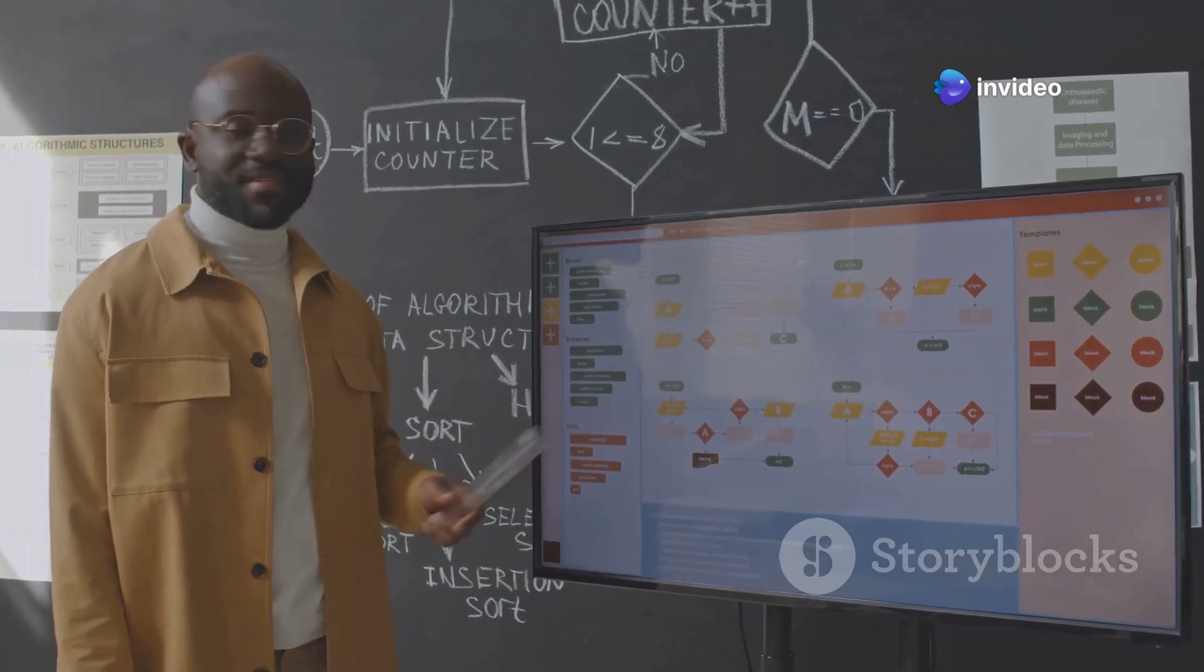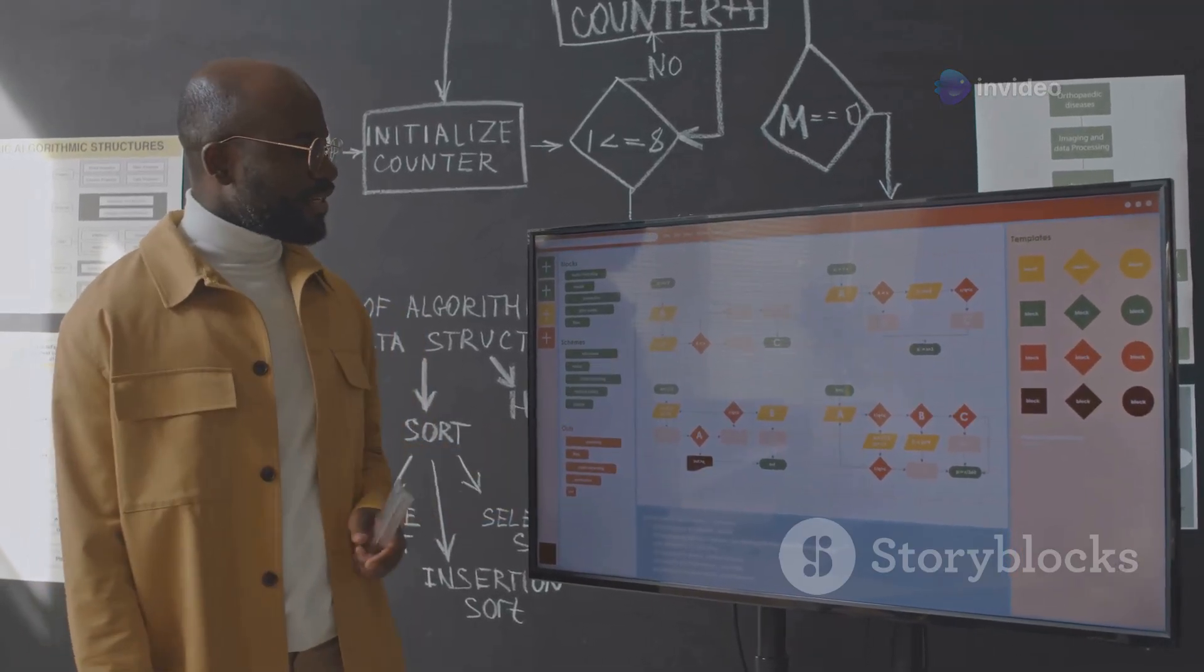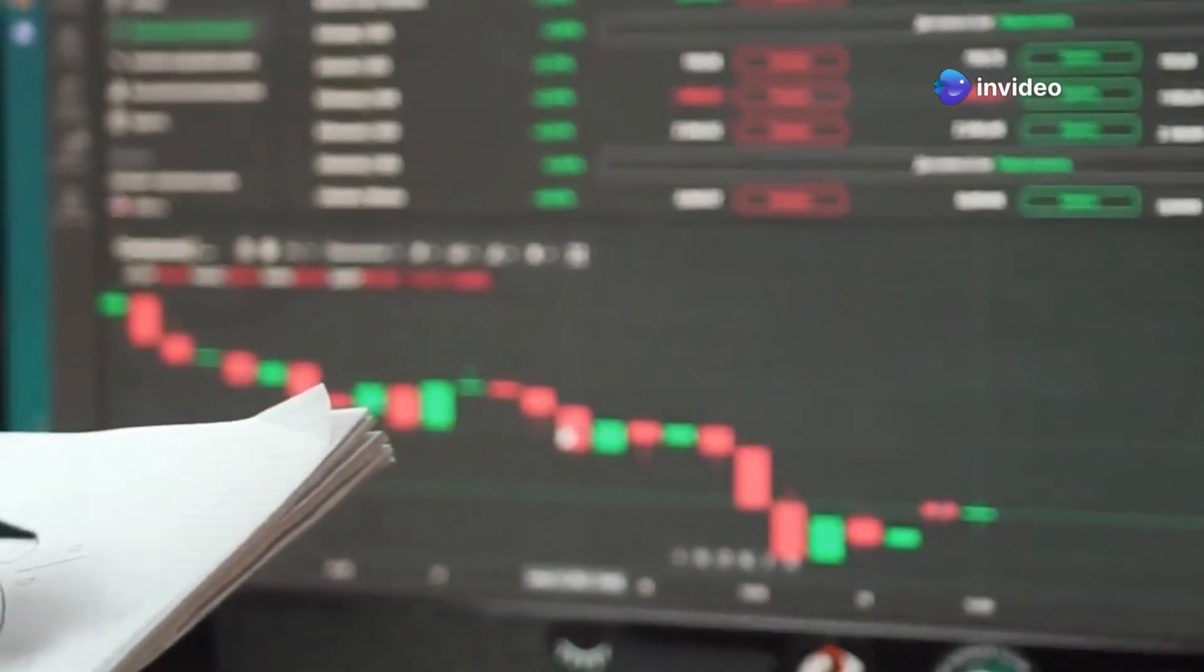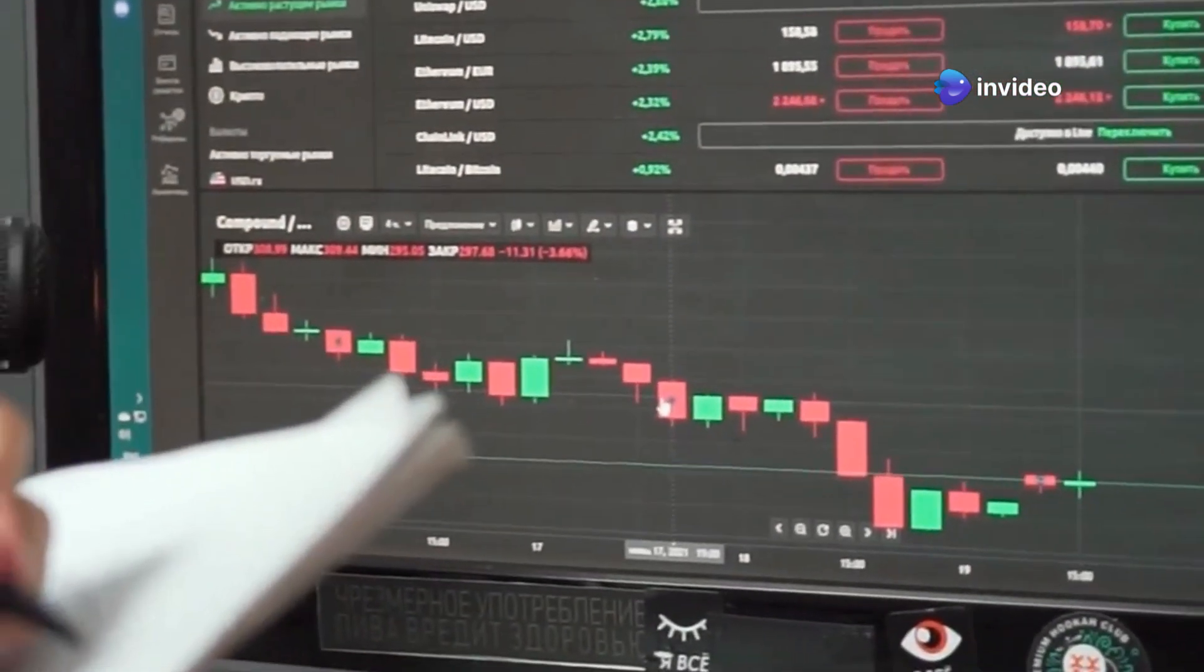Two prominent DP algorithms in RL are policy iteration and value iteration. Policy iteration involves policy evaluation, policy improvement, and repeat. Value iteration involves value update, repeat, and extract optimal policy.